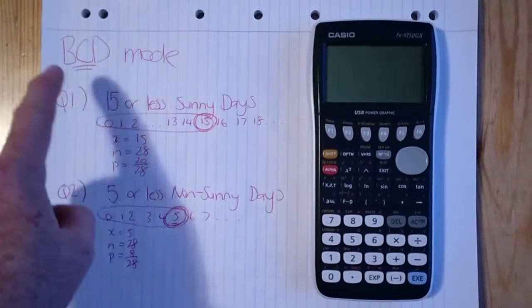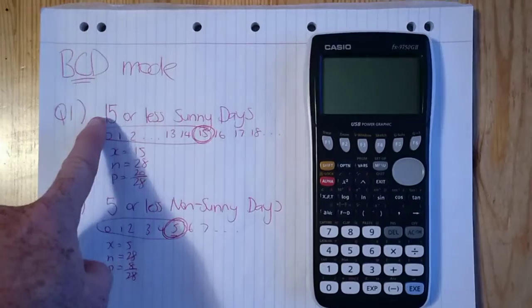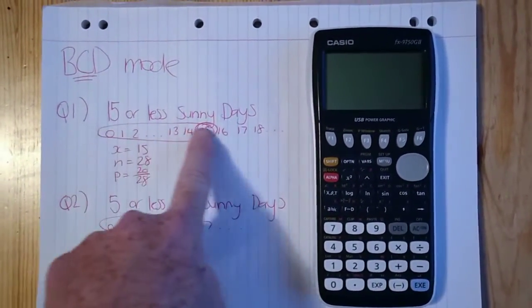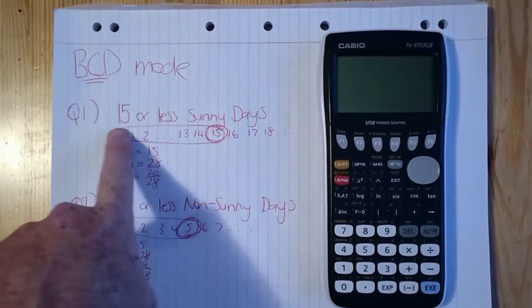So let's get into question one, which relates to the video that we looked at. What was the probability of getting 15 or less sunny days in that February? We've done our number line and 15 or less includes 15 and anything below.